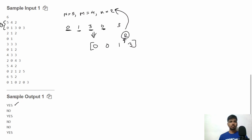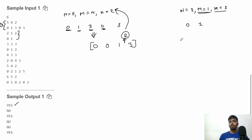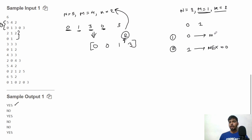Test case 2: N=2, M=1, K=2, array is [0, 1]. We can only select one element. If we select 1, MEX is 0. If we select 0, MEX is 1. In both cases we cannot achieve MEX equal to 2, so the output is NO.